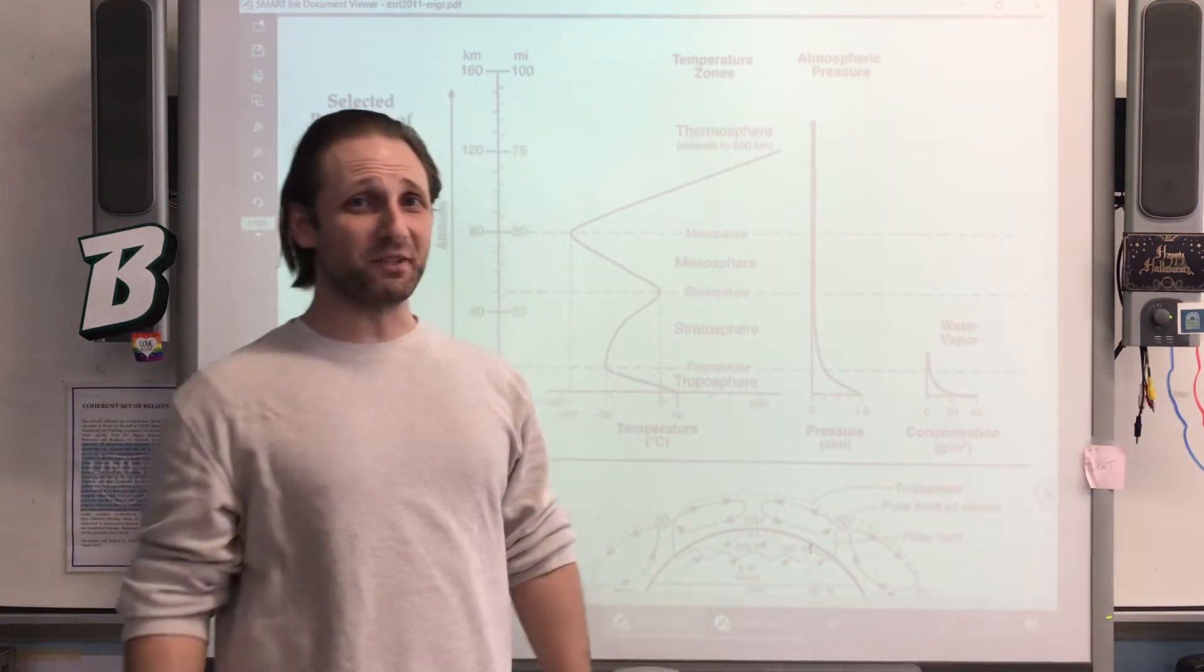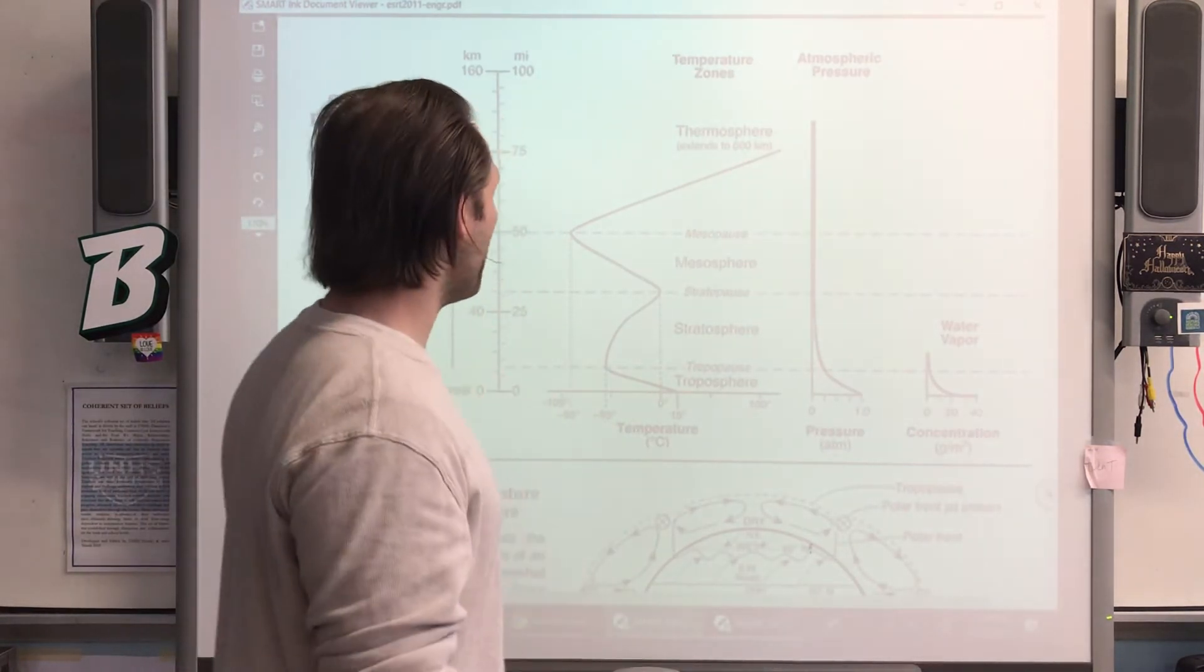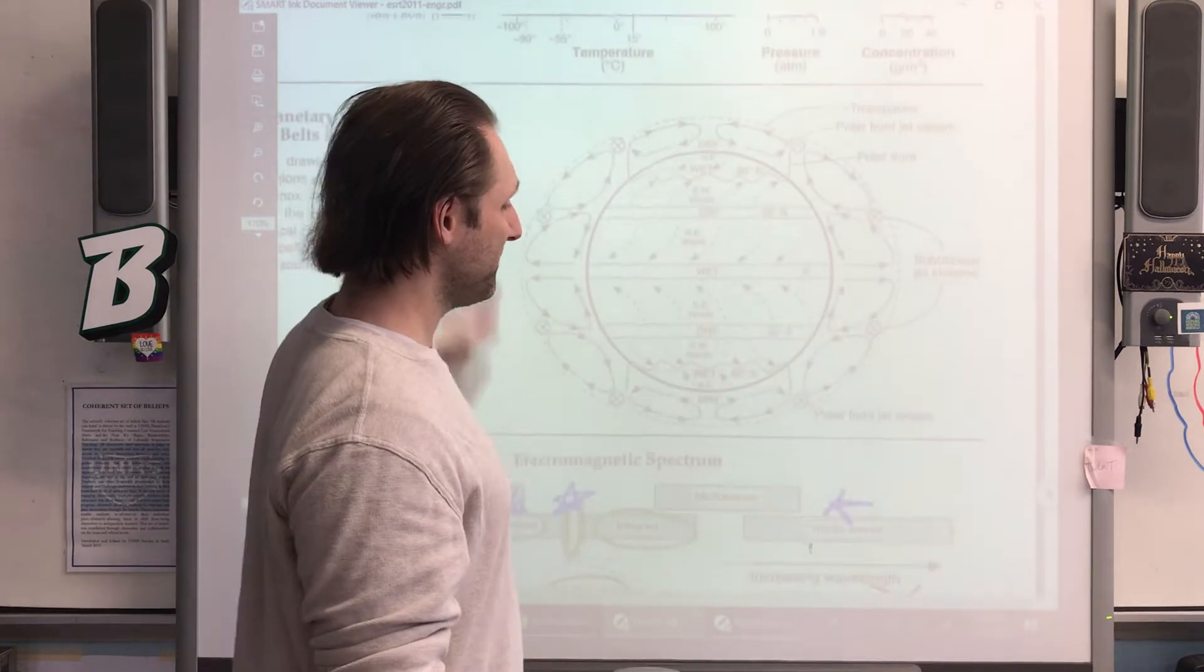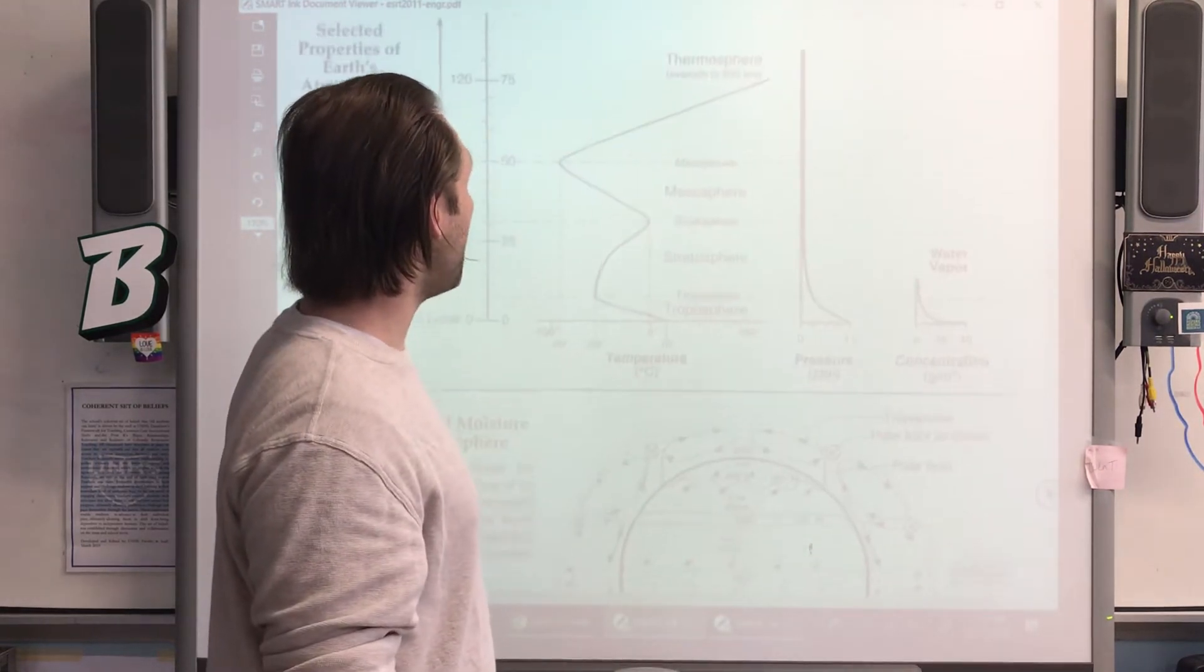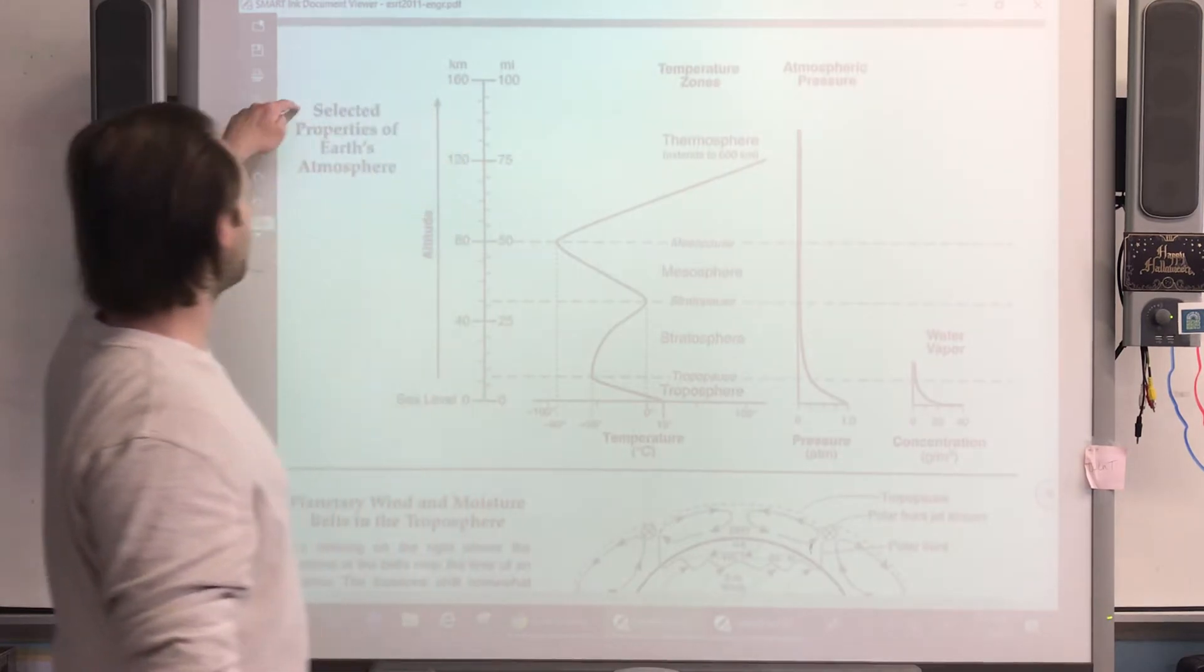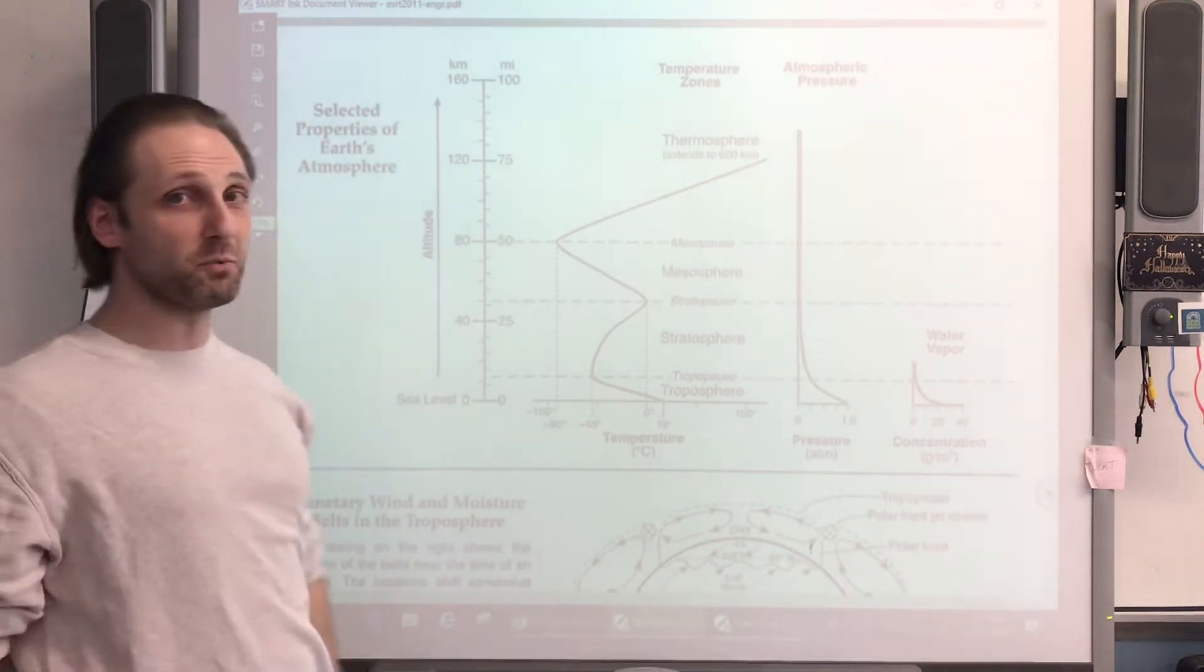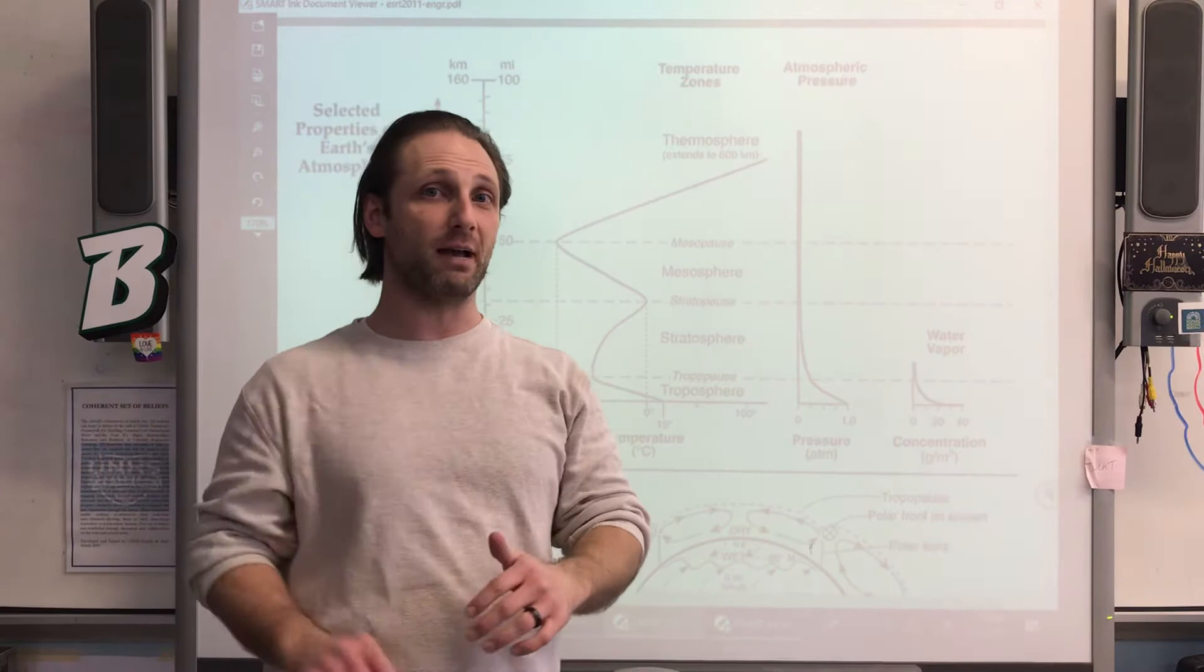Okay, so we're going to do this one a little bit differently today. Right now I want you to be on page 14 of the reference tables at the top of the screen. This is called Selected Properties of Earth's Atmosphere, so we're going to talk about the different layers of the atmosphere.